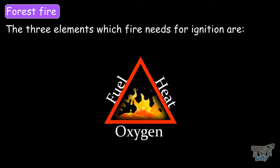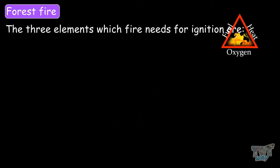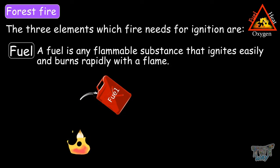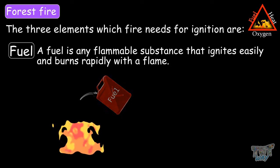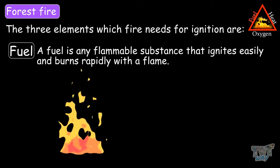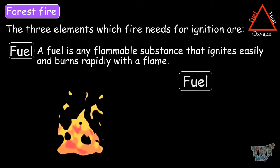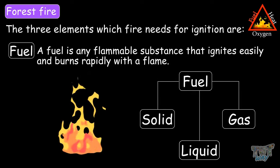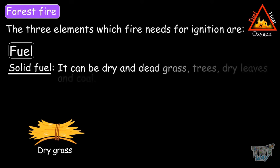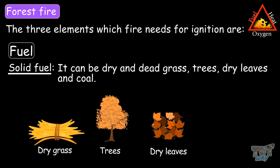Let's understand them one by one. The first one is fuel. Fuel is a flammable substance that ignites easily and burns rapidly with a flame. This can be a solid, liquid, or a gas. Solid fuels can be dry and dead grass, trees, dry leaves, or coal.